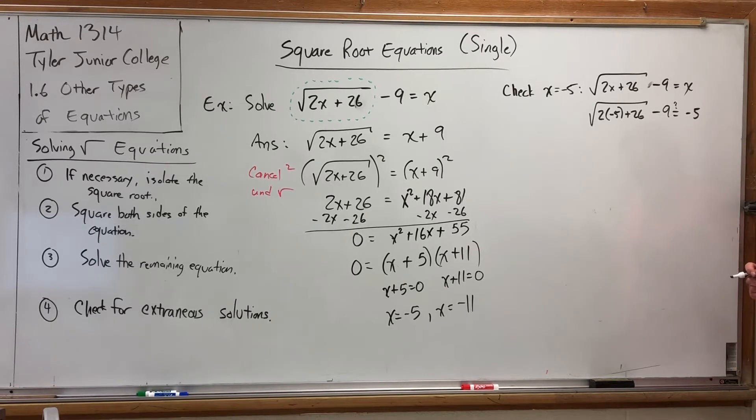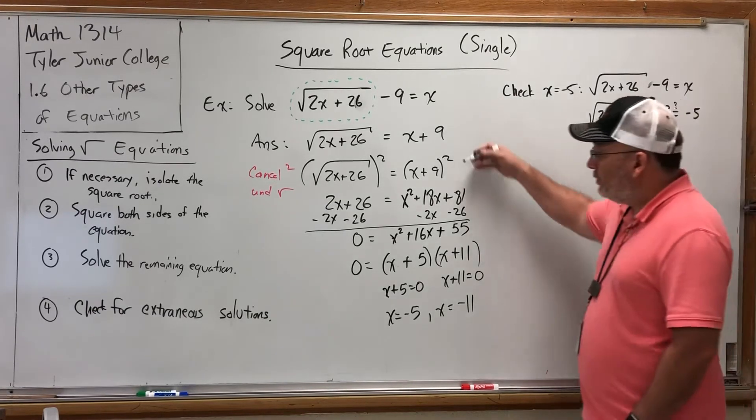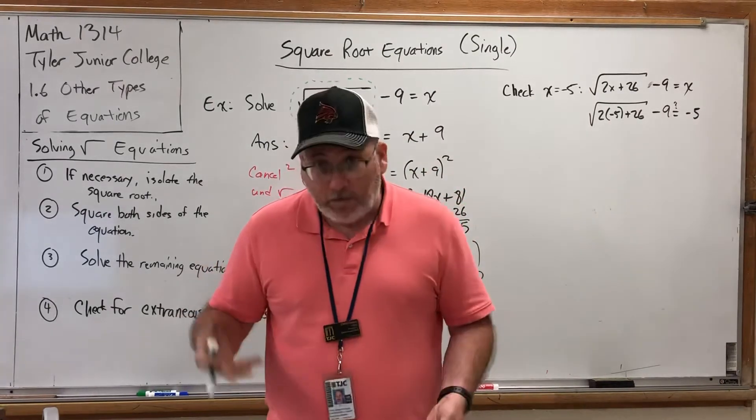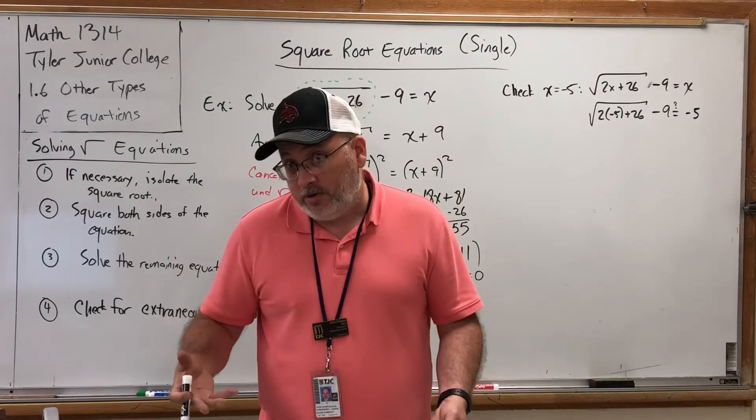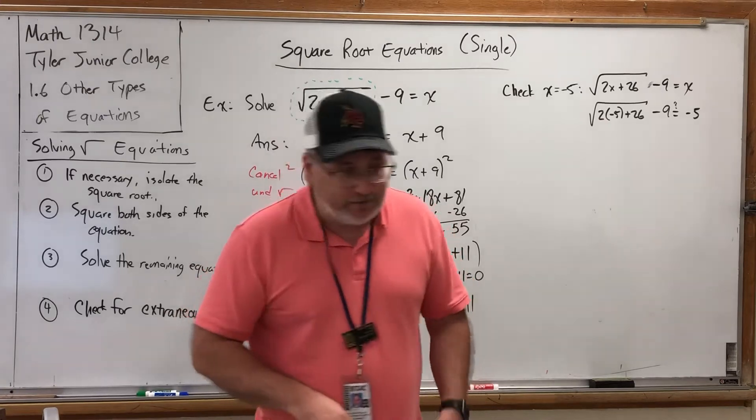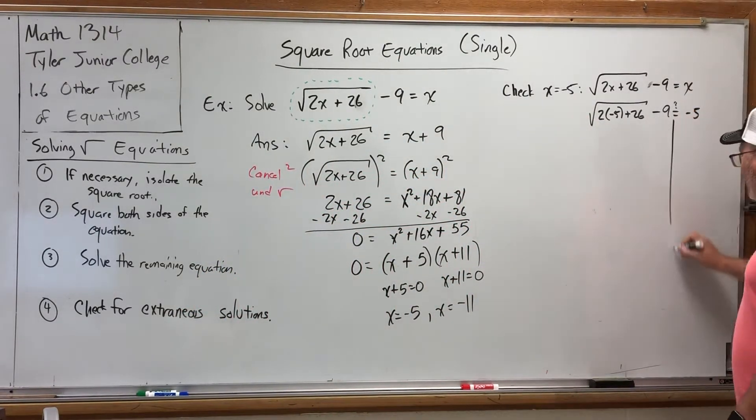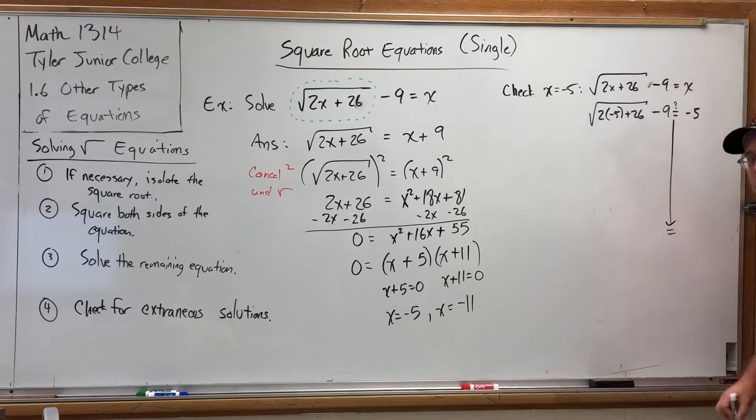Now, don't do things like add 9 to both sides or square both sides, like we did at the beginning here. Those moves are based on the premise that both sides are equal, and we don't know if they're equal. So doing those moves are not correct. So how do we check this? We have to work each side of this equation independently and see if we get the same answers.